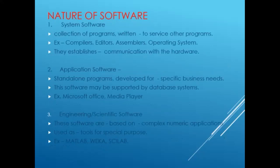The nature of software includes several categories. First, system software — a collection of programs written to service other programs, such as compilers, editors, assemblers, and operating systems. These establish communication with the hardware. Second, application software — stand-alone programs developed for specific business needs, which may be supported by a database system. Examples include Microsoft Office and Media Player.